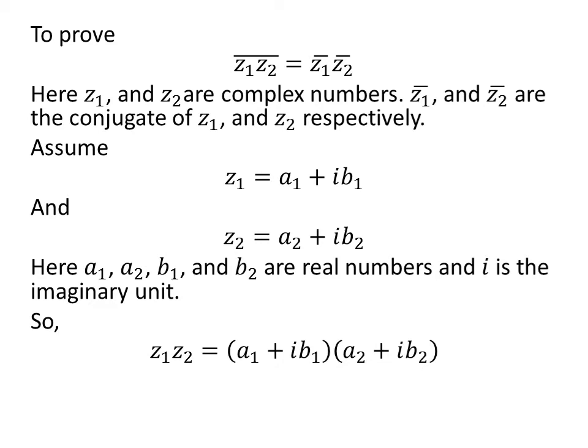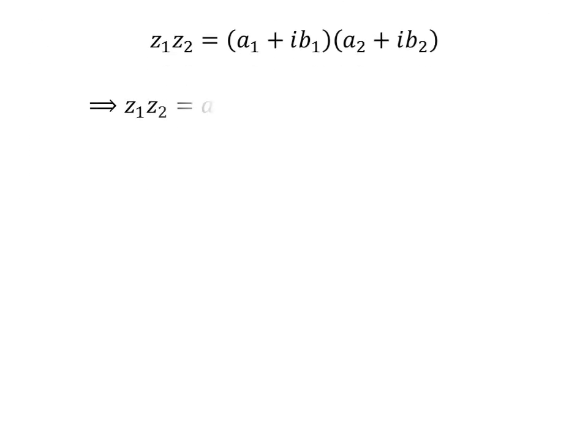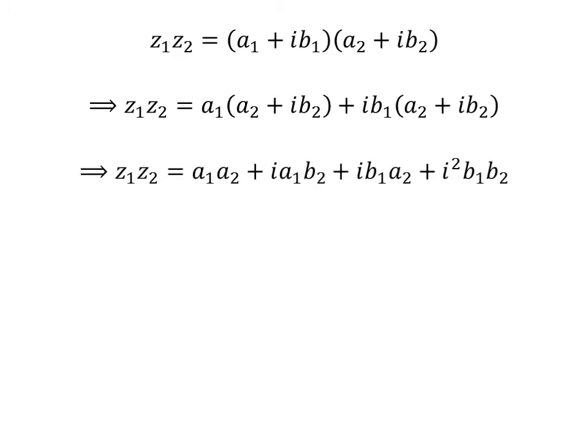So z1 times z2 is equal to (a1 plus i times b1) times (a2 plus i times b2). Expanding gives us z1 times z2 is equal to a1 times a2 plus i times a1 times b2 plus i times b1 times a2 plus i squared times b1 times b2.